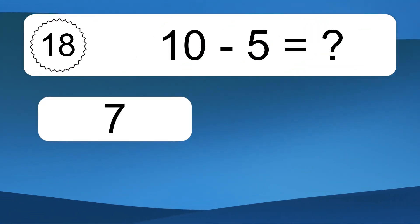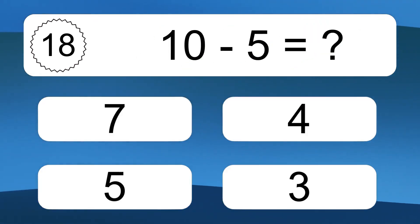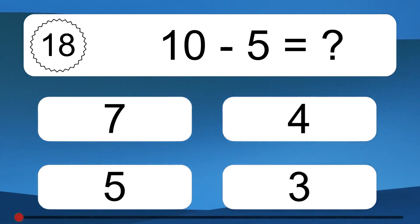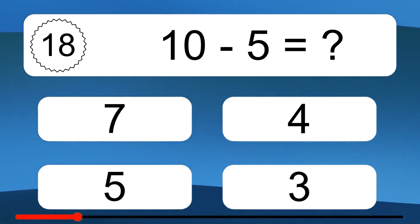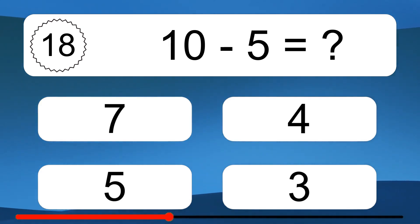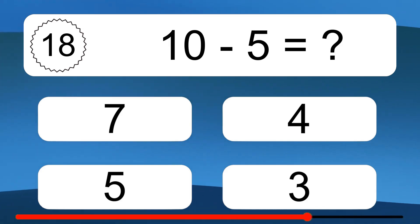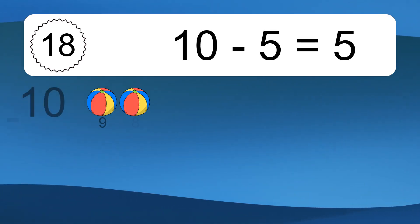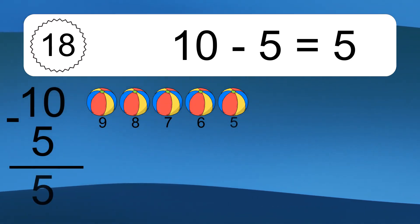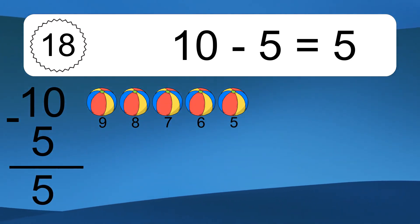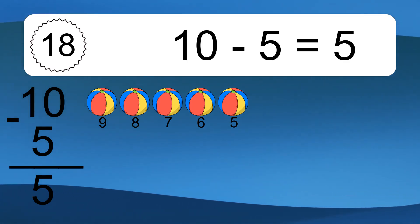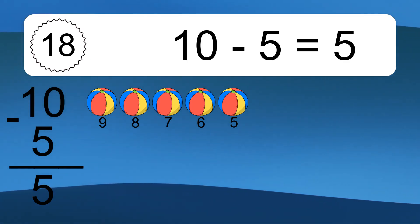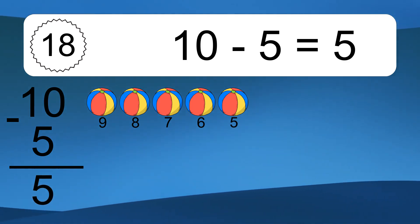10 minus 5 equals what? 10 minus 5 equals 5. Let's count it: 9, 8, 7, 6, 5.